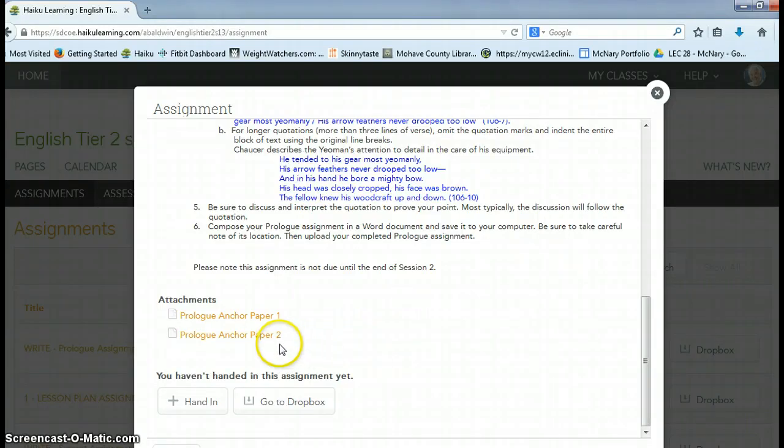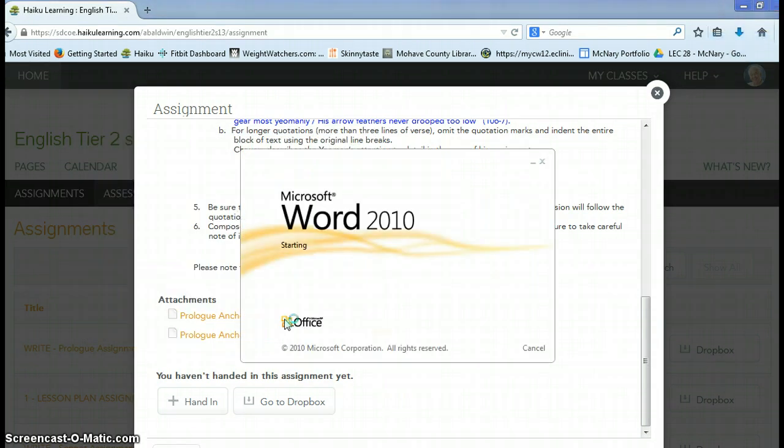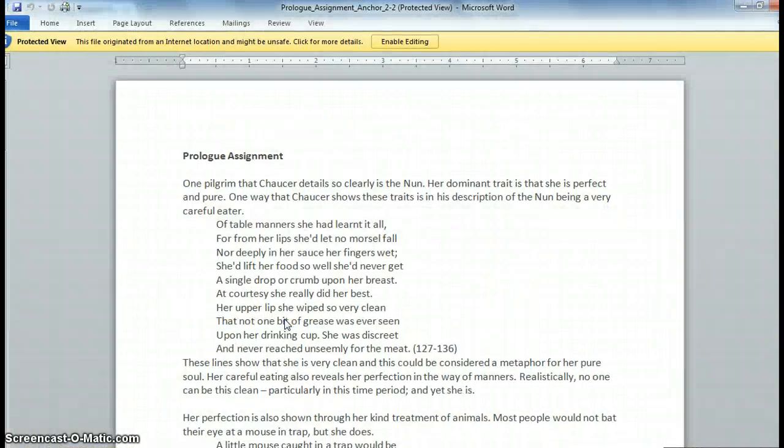For this assignment in Tier 2, we've asked that you quote directly from Canterbury Tales to provide your character analysis with some evidence. Formatting and punctuating quotations can be a real challenge, so seeing a finished product can be really helpful. Thanks for watching, and I hope you'll try using anchor papers with your students soon.